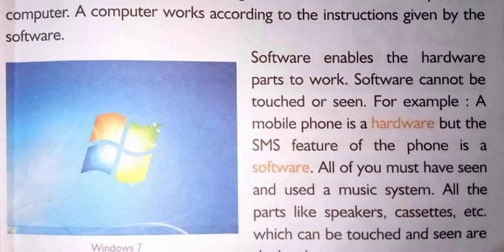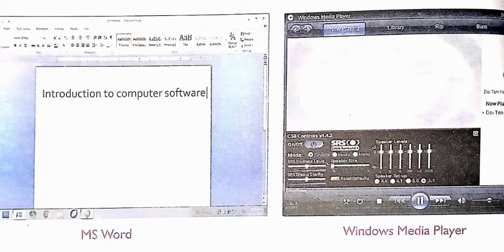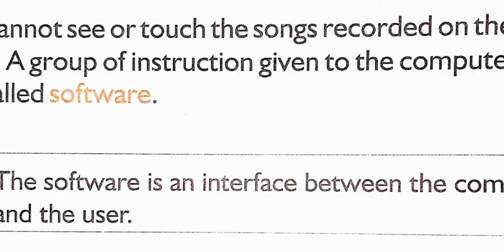All of you must have seen and used a music system. All the parts like the speaker and cassettes, etc., which can be touched and seen, are hardware. But you cannot touch or see the songs recorded on the tape — that is called software. So here is the definition: a group of instructions given to the computer to do a particular work is called software.